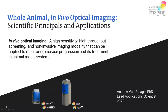In general terms, in vivo optical imaging is a high-sensitivity, high-throughput screening, non-invasive imaging modality that is generally used for the purposes of monitoring disease progression and the efficacy of therapeutics in a wide array of animal model systems.